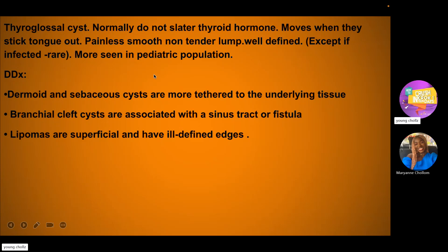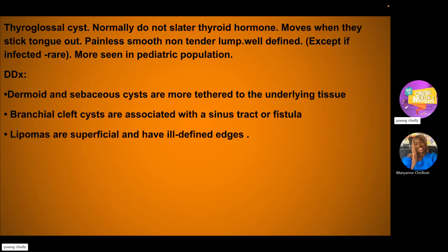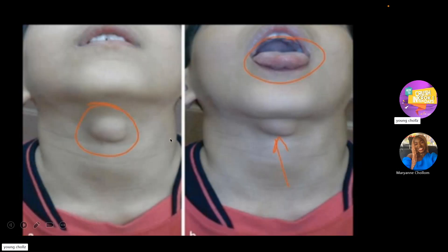On palpation, a thyroglossal cyst will be a painless, small, non-tender lump that is well-defined. It moves when the patient protrudes their tongue, and we mostly see this in the pediatric population. The thyroglossal cyst can be painful, but only when there's infection, and this is very rare. You can see a photo of thyroglossal cysts when they protrude their tongue.